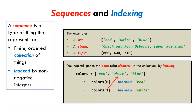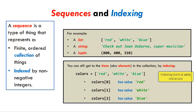Colors[1] refers to the next item of the sequence, here the string white. And colors[2] refers to the item after that, here the string blue. Note that indexing starts at zero, not at one.